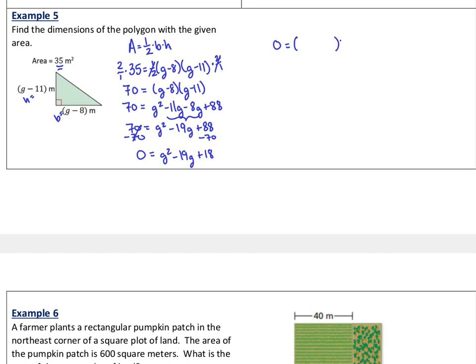This is going to be another magic numbers factoring. We've got a lead of 1. What two magic numbers will multiply to be 18 and add up to negative 19? Those are negative 1 and negative 18. So I know my factors are g minus 1 and g minus 18. Let's solve the mini equations and see which one works for our dimensions. Because we want some number of meters for this height and some number of meters for this base.